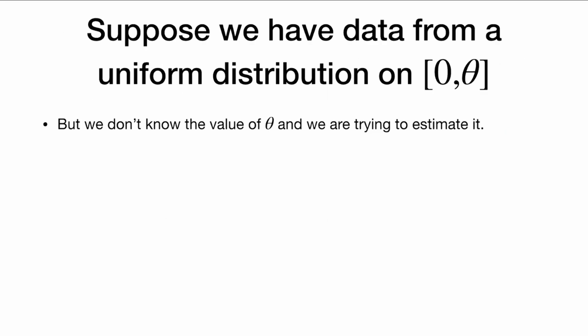Suppose we have data from a uniform distribution on [0, θ]. We have data on this interval from 0 to θ and all values are equally likely, but we do not know what θ is and we are trying to estimate it.